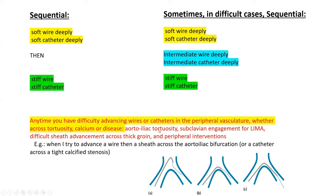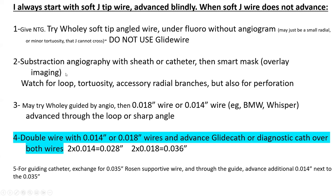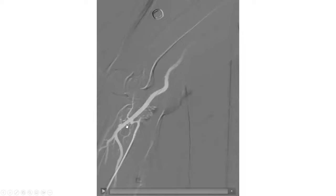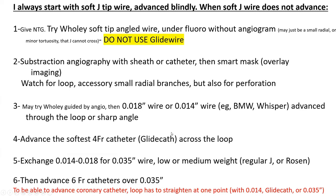I will give you some modifications of that technique. After you advance your O14-inch or O18-inch wire, instead of advancing a glide cath and exchanging for an O35-inch wire, you can double wire with O14- or O18-inch wire. Remember, if you put two O14-inch wires, that becomes O28-inch. If you put two O18-inch wires, that's O36-inch — basically close to having an O35-inch wire in that artery. So after crossing the loop with an O14-inch whisper, you could put another O14 or O18 and advance your coronary catheter straight over those.